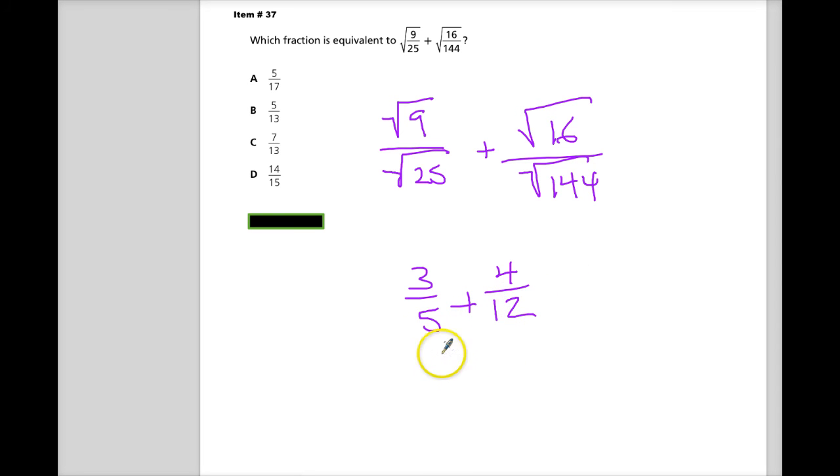So I'll do 60 as my common denominator. So 5 times 12 gives me 60, 3 times 12 gives me 36. Oops, I don't know why I wrote 12 there. Right, 60. 12 times 5 is 60, 4 times 5 is 20. So add this together.